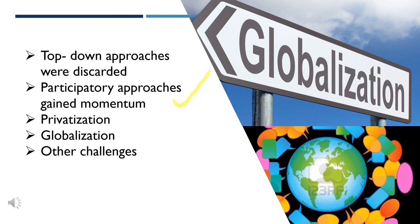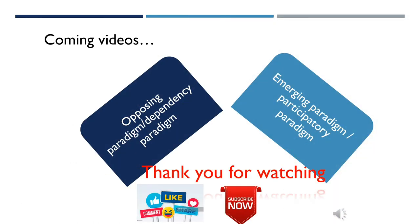The 1990s saw privatization and globalization processes. In the beginning of the 21st century, it was easy to disseminate information as the world became interconnected, making it easier to convey development goals. However, new challenges emerged: climate change, extremism, terrorism, worsening of human rights, and discussions regarding freedom of expression. All these are becoming major concerns across the globe, and the phase of development communication continues to change. In coming videos, we will discuss the dependency paradigm and participatory paradigm.